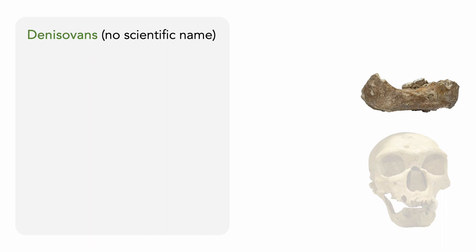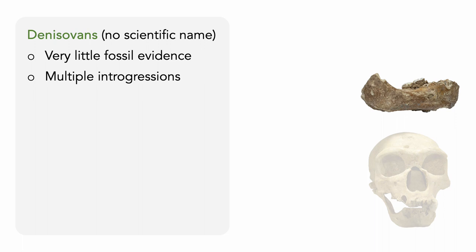Denisovans could be found all across Asia during the Middle Paleolithic, eventually crossing the Wallace Line and colonizing Papua New Guinea and other parts of Oceania. Unfortunately, there is very little fossil evidence of the Denisovans — we know of tool use, a simpler version of the Mousterian tradition which includes scrapers and blades, but not much more than that. However, the Denisovans do live on — or at least some of their genes do — because of multiple introgressions with Homo sapiens in Southeast Asia and Oceania.